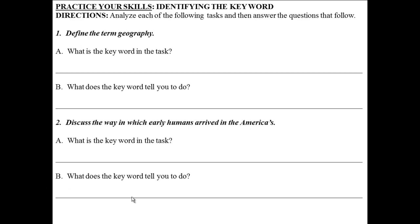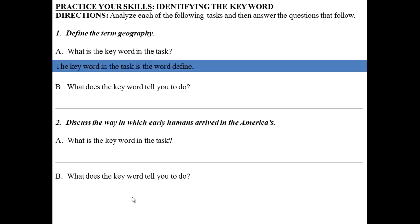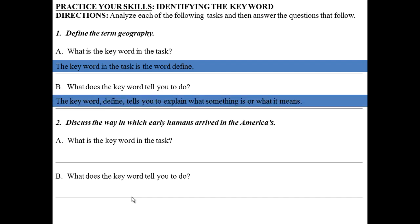Let's do a couple of practices. Number one: define the term geography. Letter A — what is the keyword in the task? The keyword in the task is the word 'define.' Keywords often start the sentence, but not always. Letter B — what does the keyword tell you to do? The keyword define tells you to explain what something is or what it means.